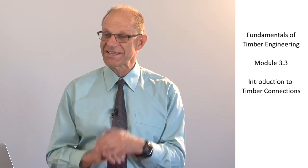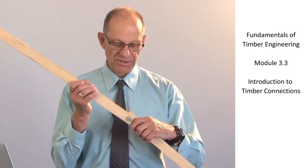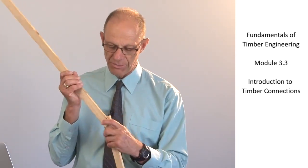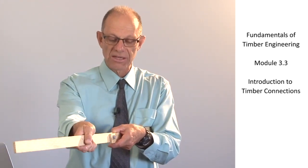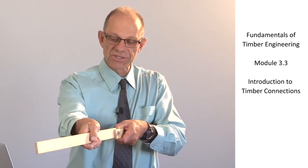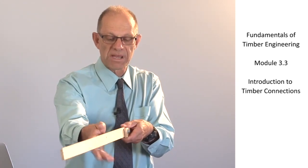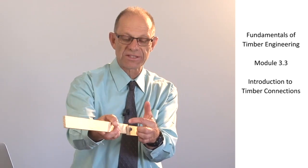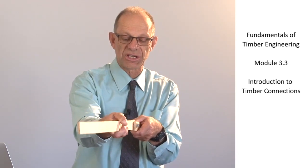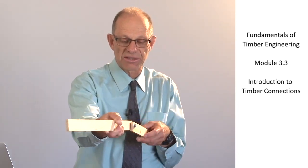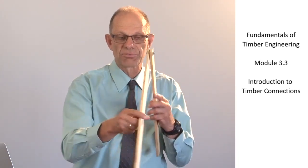The basic categories of timber connections: type 1 connections simply mean that the fastener has shear on it. Here we have a connection between two pieces of timber with a bolt between them. As we put these two members into tension, the load is transferred from one member into the bolt. The bolt then transfers the load across the gap between the two members using shear in the bolt shaft, and then into the other member. So it's shear in the bolt that is transferring the load between the members.